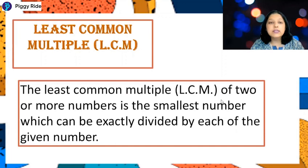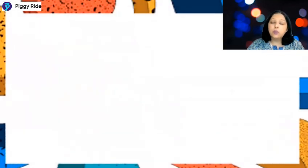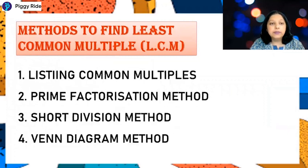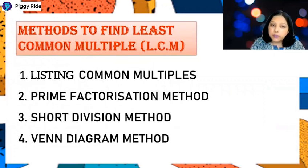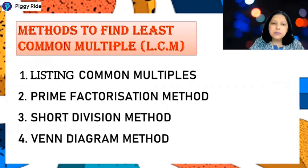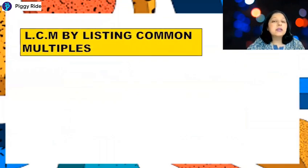There are different methods to find LCM. The first is listing common multiples, then we have the prime factorization method, then the short division method, and then the Venn diagram method. Let's discuss all the methods one by one.